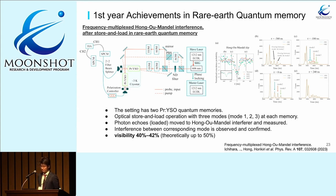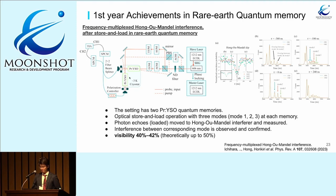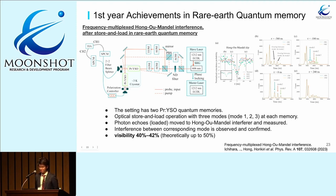Another achievement is frequency-multiplexed Hong-Ou-Mandel interference after store and load in rare earth quantum memory. This setup has two Pr:YSO quantum memories. A store-and-load operation with three modes at each memory is executed, and after that the photon echoes loaded from memory are moved to the Hong-Ou-Mandel interferometer and measured. Interference between corresponding modes is observed and confirmed, demonstrating frequency multiplexing. The result visibility reaches 42%.